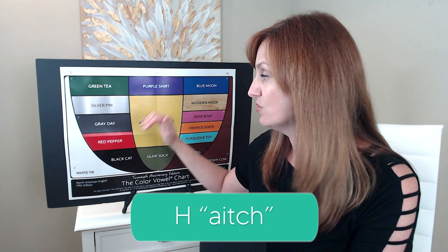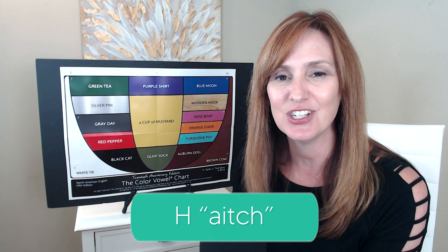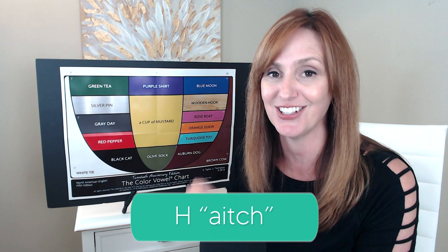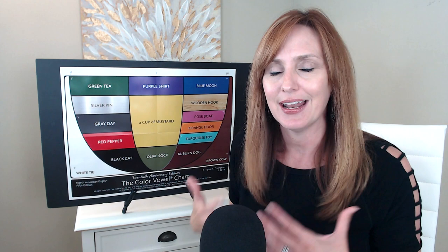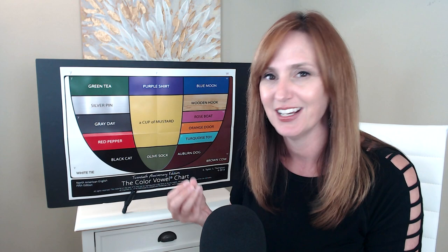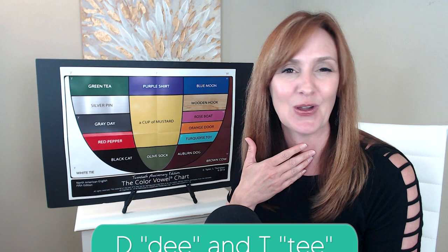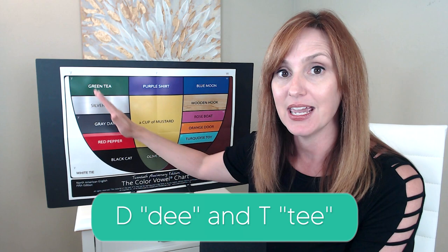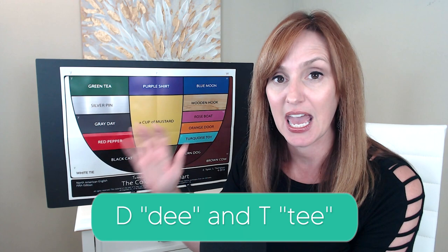The name of the letter H starts with the gray day vowel sound — A — then ends with the CH sound as in cheese or chocolate. H. You want to make sure you're not adding any extra consonants in front of the name of this letter. A common addition is a Y sound — Y-H — or adding an actual H consonant. No, the name of this letter starts just with that gray day vowel, right into the CH sound. H.